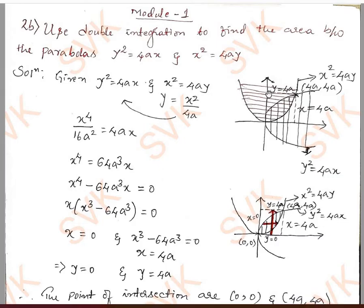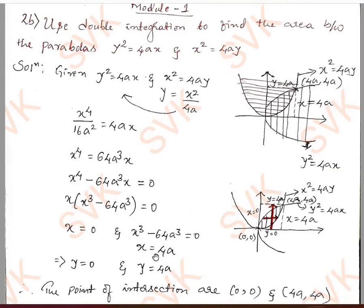The horizontal lines represent the region under x² = 4ay, and the vertical lines represent the region under y² = 4ax. The overlapping region is the area we are required to find. In the new graph, the overlapping region has intersection points (0, 0) and (4a, 4a), with boundaries x = 0, y = 0, x = 4a, and y = 4a.